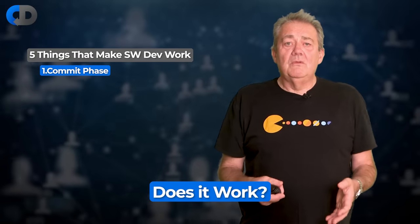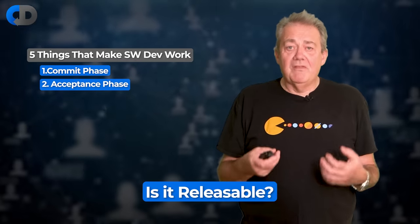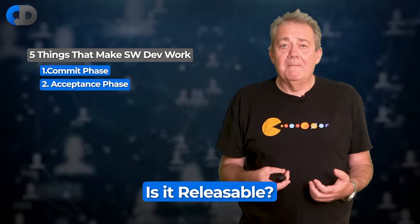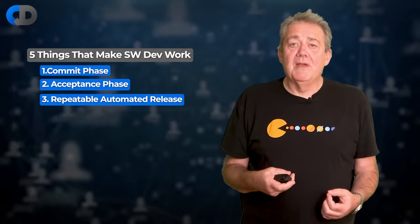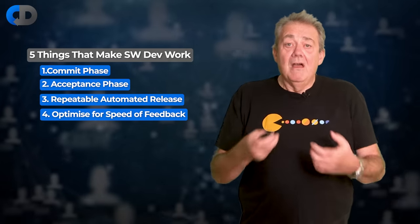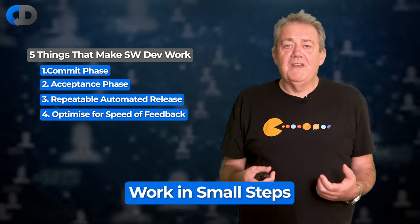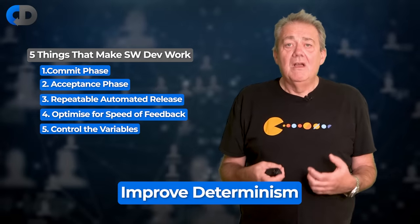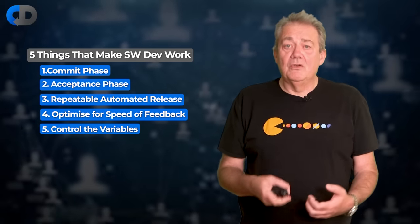So my five things are: answer the question 'does it work and is it good?' using fast commit phase testing continuously; then answer 'is it releasable?' multiple times per day with fast acceptance phase testing; make the release process itself reliable and repeatable through automation and version control; then optimize all of these for speed to improve the speed of feedback; and increase the determinism of all your tests and your code by controlling the variables with version control and automation.